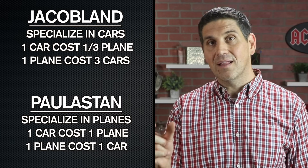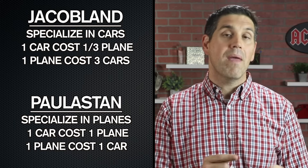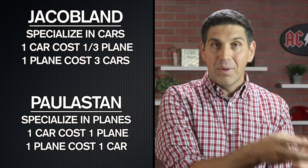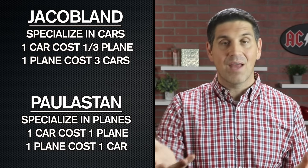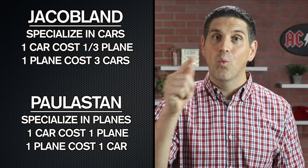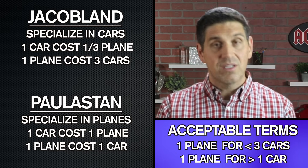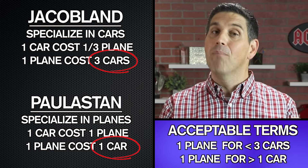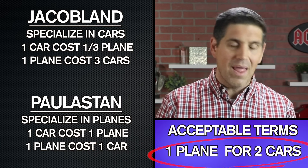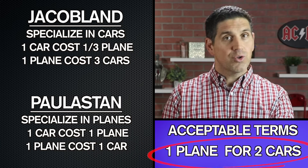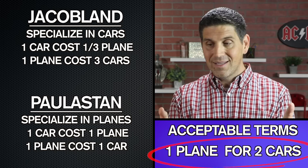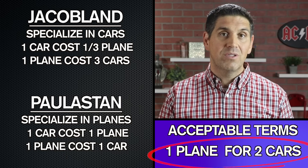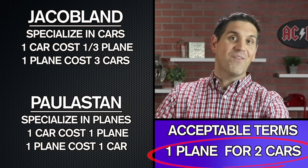Polistan specializes in planes but wants cars. If they make cars themselves, they have to give up one plane. So if the terms of trade were one plane for ten cars, Polistan would totally go for that — but Jacob Land wouldn't. To benefit both countries, the terms of trade needs to be one plane for something less than three cars but something more than one car. For example, one plane for two cars would benefit both countries. Each country could specialize in one product and then trade for the other at a lower opportunity cost than if they produced it themselves — the benefits of trade.